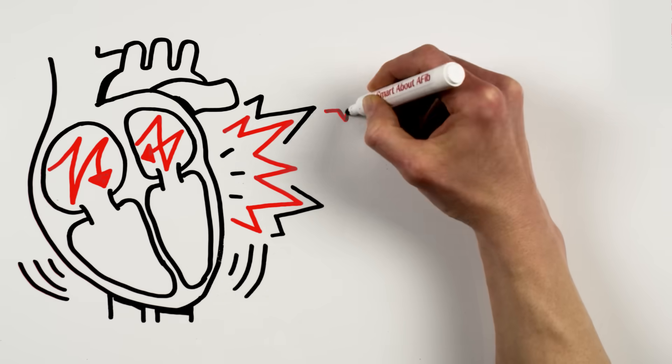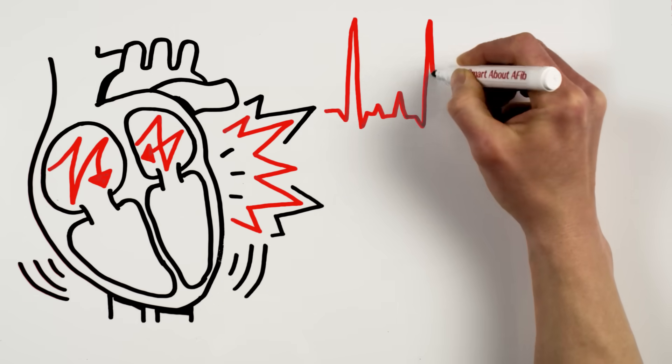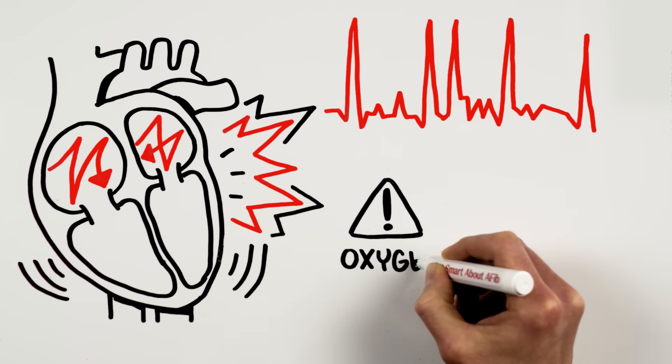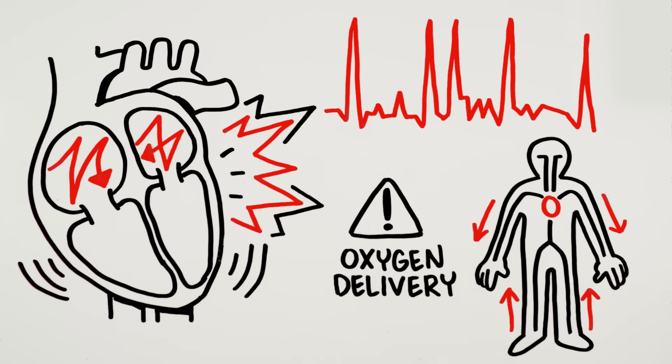AFib interrupts the heart's electrical system, causing the heart to beat irregularly and disrupting normal blood flow. This can affect oxygen delivery throughout the body and can make you feel sick.